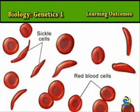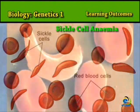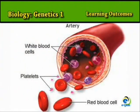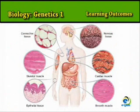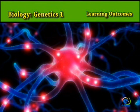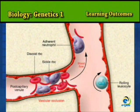A similar principle would be applied if predicting the results of crosses for genetic disorders such as sickle cell anemia and albinism. Let's take sickle cell anemia for example. This is a condition in which the afflicted individuals are unable to transport oxygen to their tissues properly, because the molecules within red blood cells that carry oxygen — molecules of the protein hemoglobin — are defective.